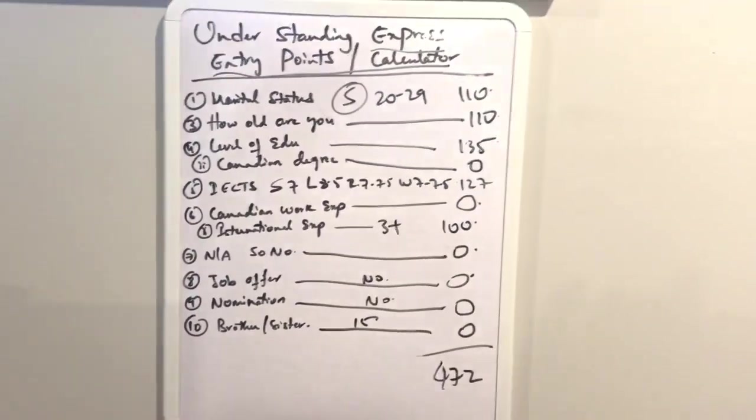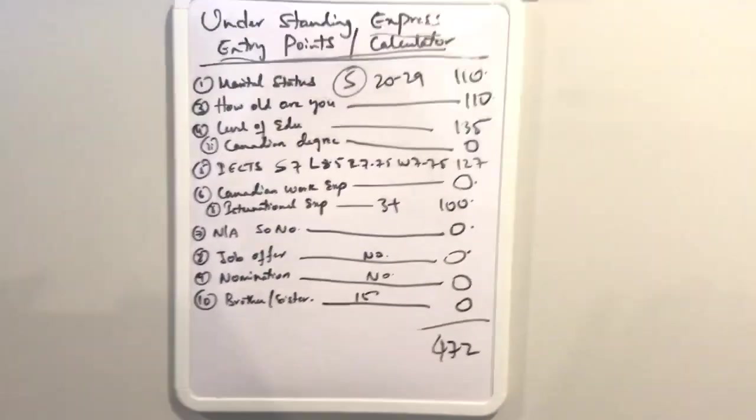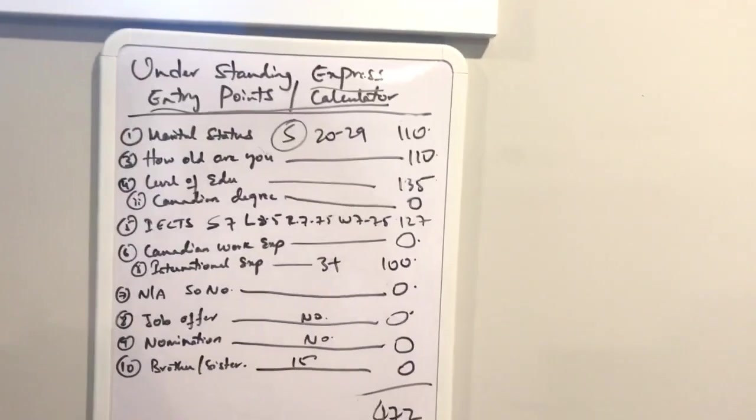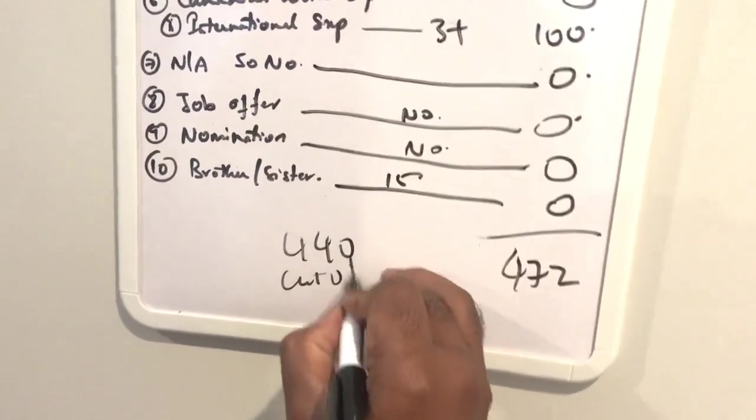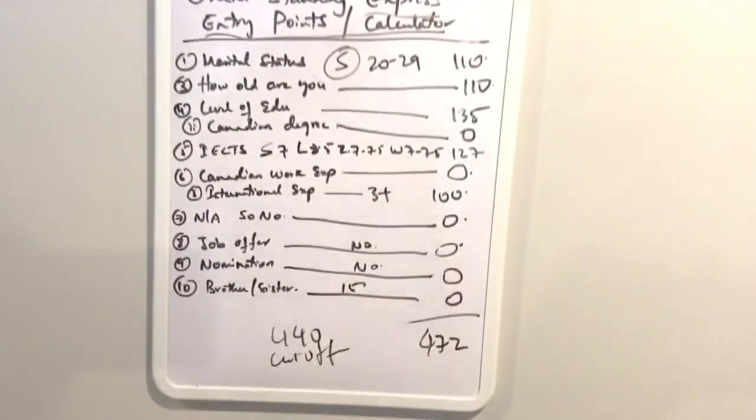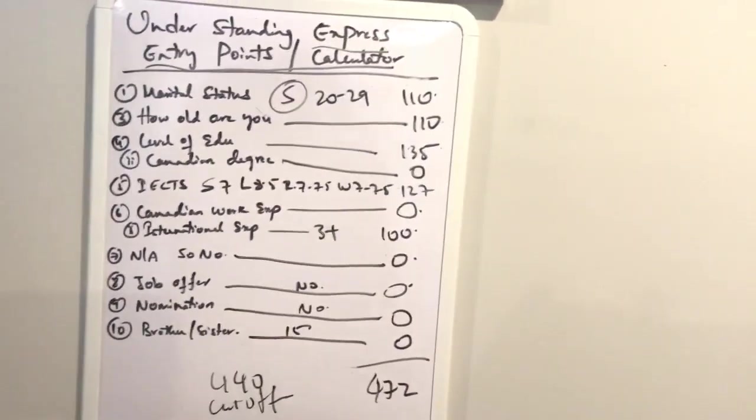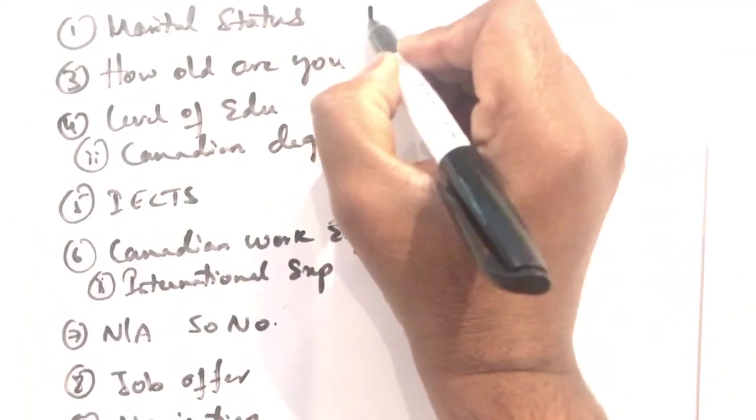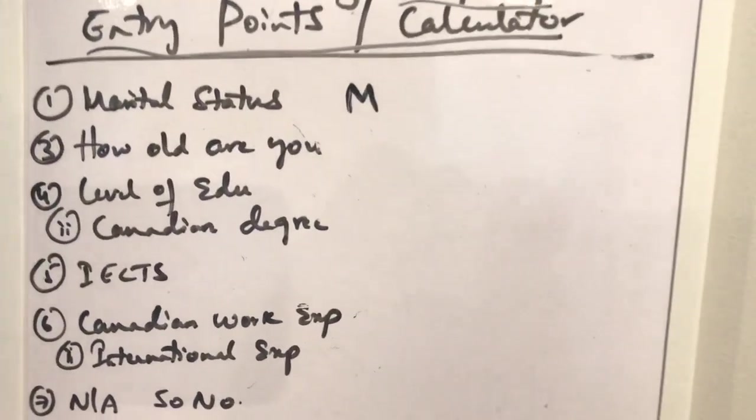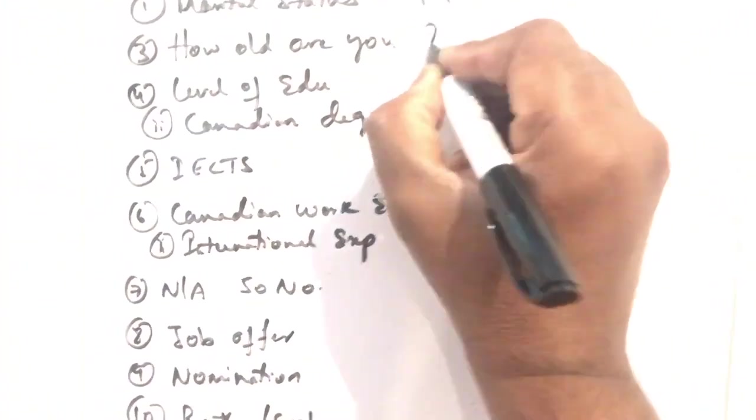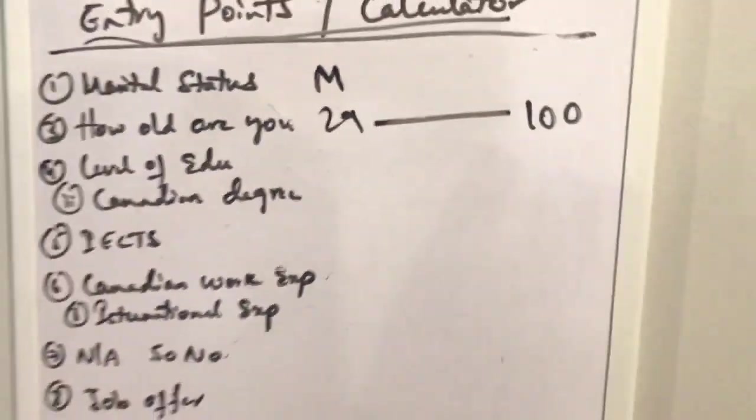So total 472, which is really high and you can apply for express entry. The chances of getting a nomination, the invitation is really good and the cut off is 440. You can calculate the points.